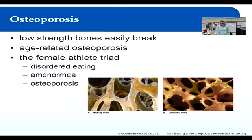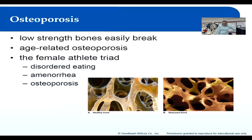Common fracture sites include the femoral neck, which is narrow and thin, the vertebrae, and the wrist — likely from falls. The second type of osteoporosis is age-related.